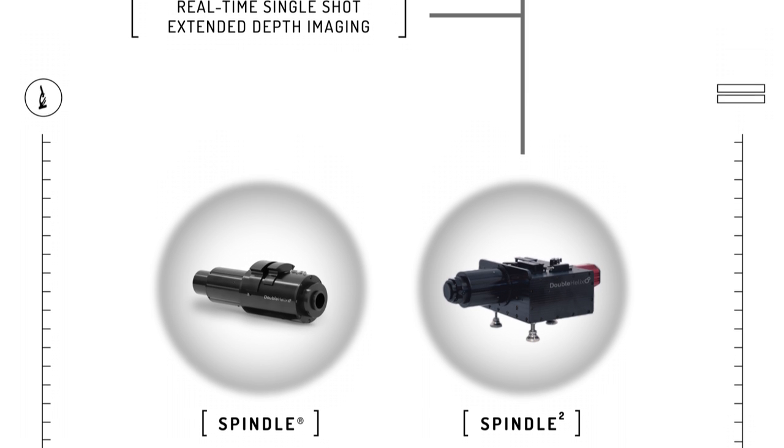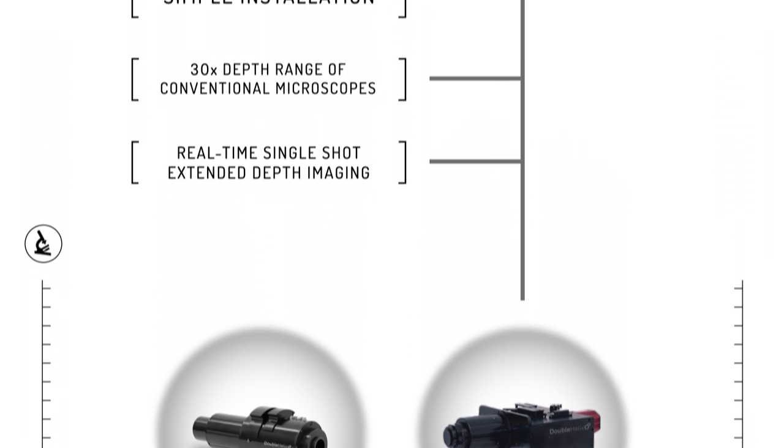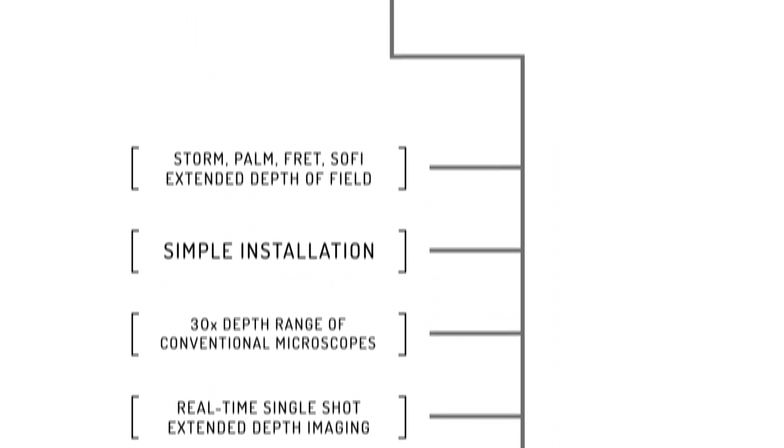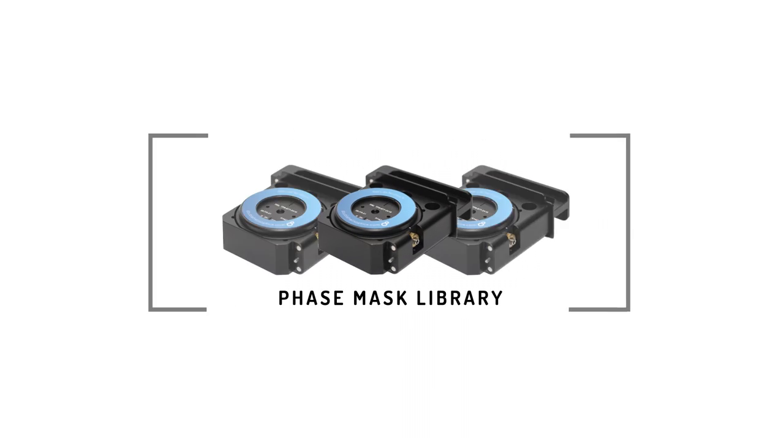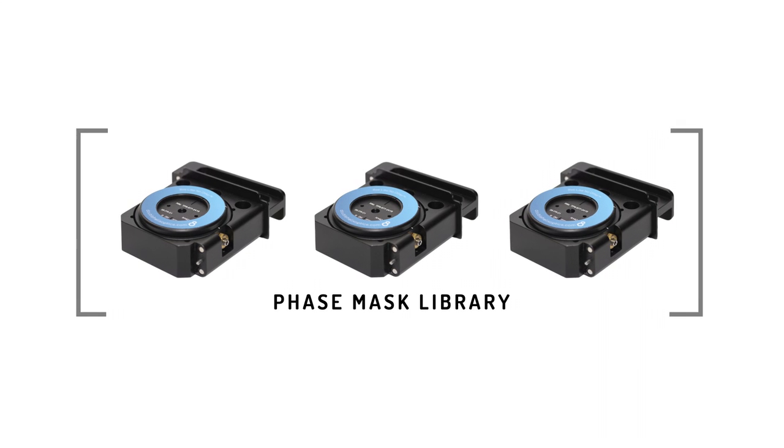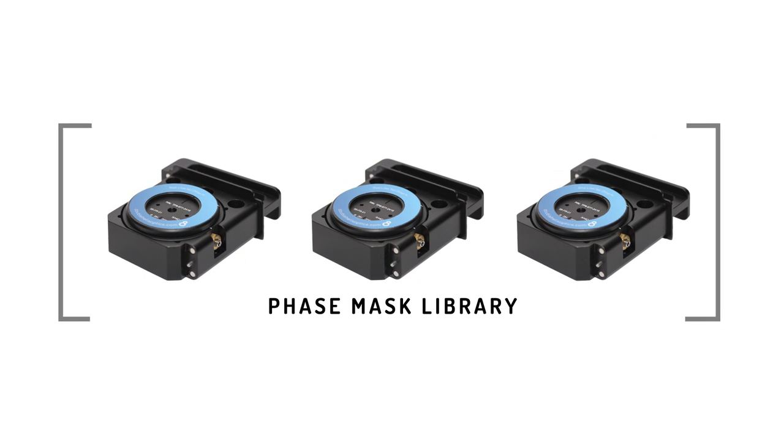The Spindle Squared offers all of the capabilities of the spindle, plus the ability to study multiple cellular processes simultaneously by combining and registering two imaging channels on a single camera. With our library of interchangeable phase masks, you get the freedom and flexibility to choose the setup that most suits your application.